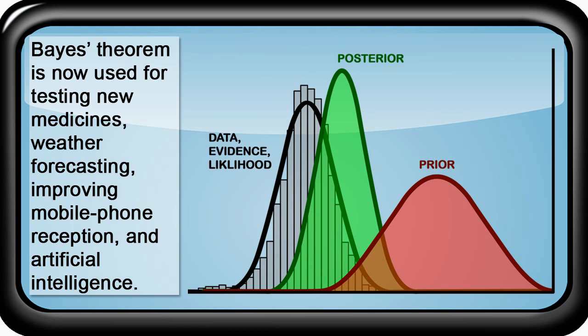The formula is now used for testing new medicines, weather forecasting, improving mobile phone reception, and artificial intelligence. Bayesian models run the algorithms of online recommendation engines by predicting what you may like based on what you have previously consumed. So just what is Bayes' Theorem?